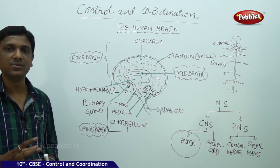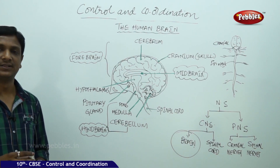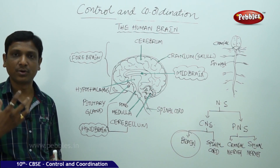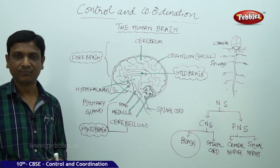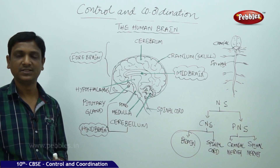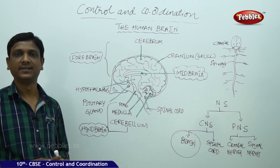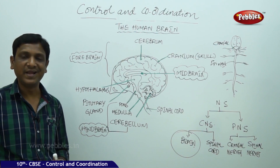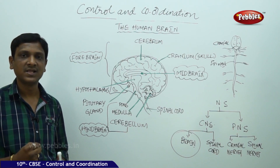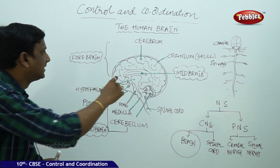Because the brain is very sensitive, very delicate, and very important, it has to be well protected. The delicate and important organs of our body are well protected by the skeletal system — for example, the heart and lungs are protected by the ribcage in the chest cavity. In the same way, the brain is protected in a hard, bony skull called the cranium.